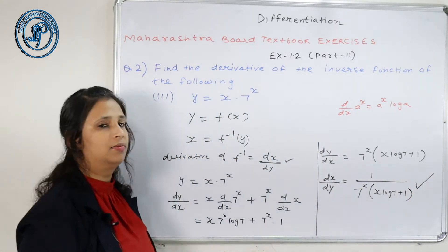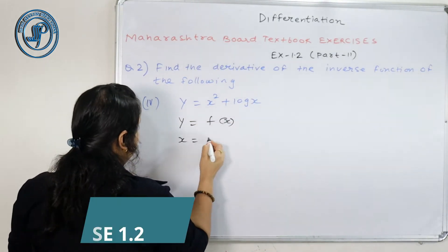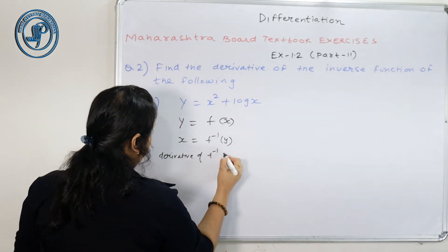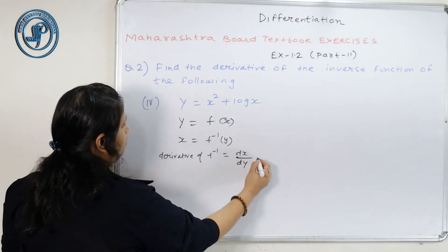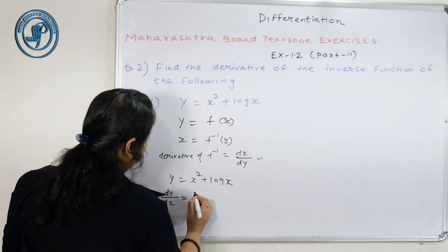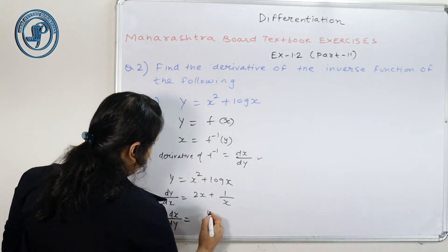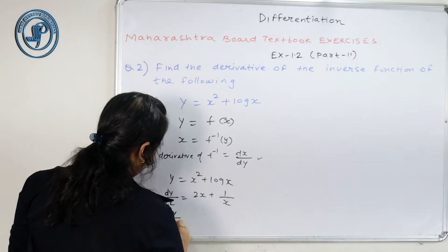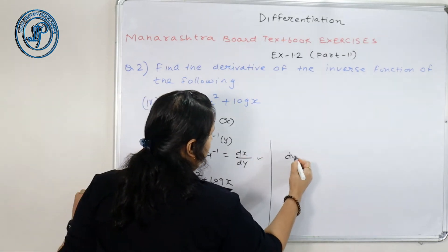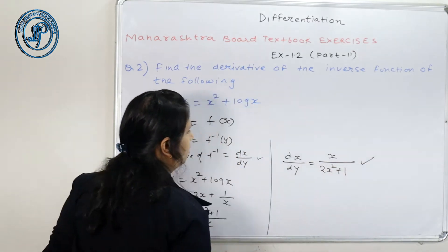So देखे, इसमें भी हम y equals to fx, then x equals to f inverse y करेंगे, and हमें dx upon dy निकालना है. y equals to x square log x है. dy by dx में product rule: x square का 2x और log x का 1 by x. Simplify करने पर: (2x square plus 1) upon x. तो dx upon dy = x upon (2x square plus 1). तो यह मेरा final answer हो जाएगा.